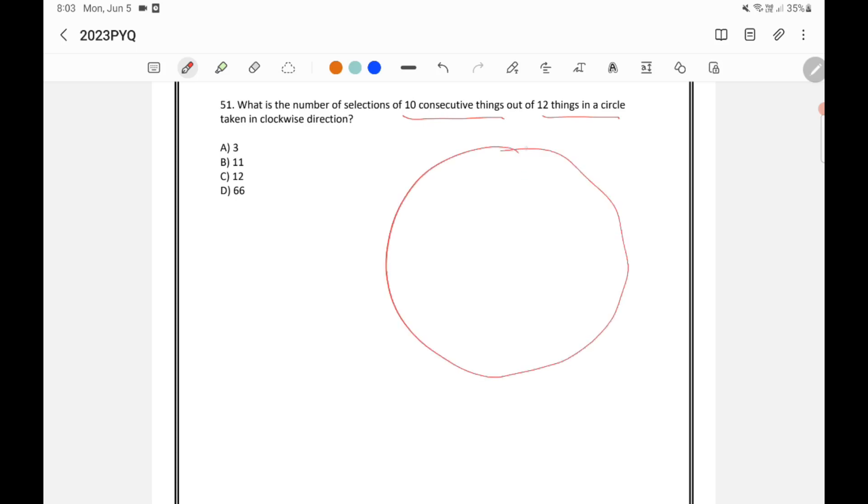So there is a circle. There are 12 things in the circle like 1, 2, 3, 4, 5, 6, 7, 8, 9, 10, 11 and 12. So these are the 12 things which are in circle.